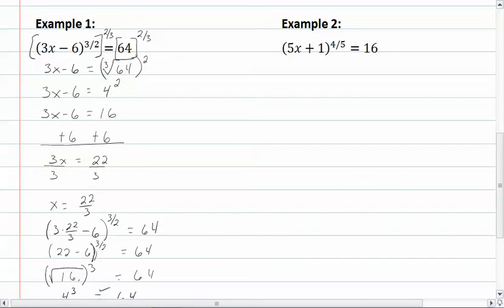Let's take a look at example 2. Here again, we are going to raise this to the reciprocal power of 5 fourths. We have an even numerator in our original equation, so that means that we will have 2 solutions.